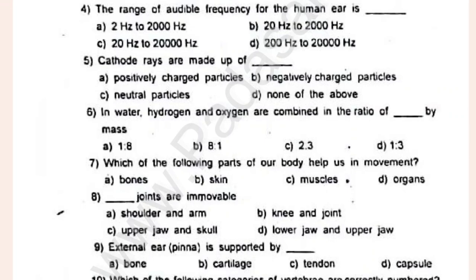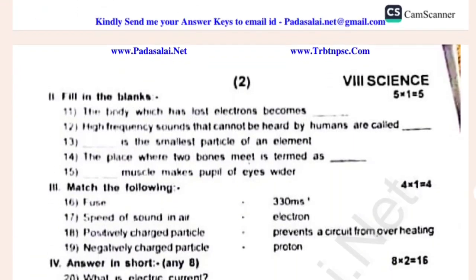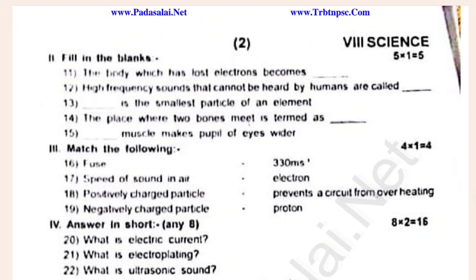External ear — which of the following categories of registered or connected numerator? Fill in the blanks: the body which has lost electrons becomes — high frequency sounds that cannot be heard by humans are called — the smallest particle of an element — the place where two bones meet is — muscle makes the pupil of the eyes wider.